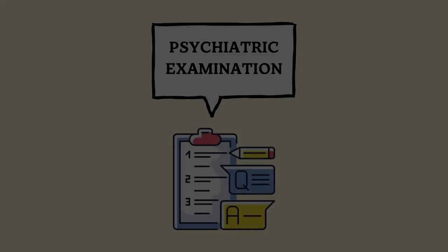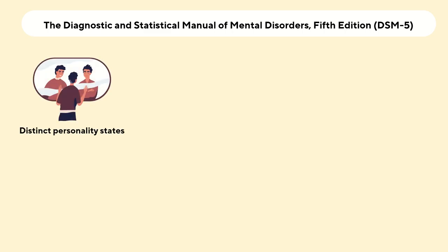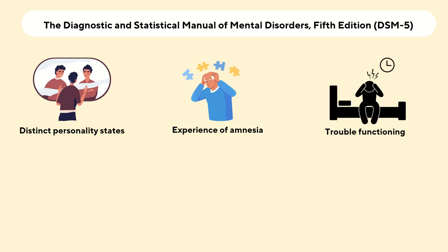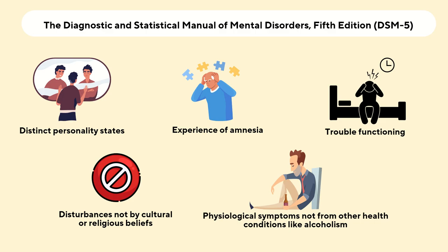The next phase is psychiatric examination. According to the Diagnostic and Statistical Manual of Mental Disorders, 5th Edition, or DSM-5, for a person to be diagnosed with DID, they must have two or more distinct personality states, have experiences of amnesia about personal information and self-identity, have trouble functioning in personal, social, or occupational areas of life, not have disturbances created by cultural or religious practices, and not have physiological symptoms from other health conditions like alcoholism, substance abuse, blackouts, or seizures.